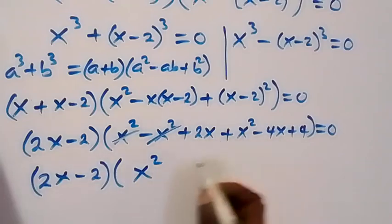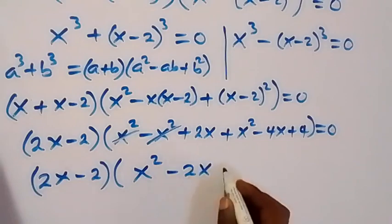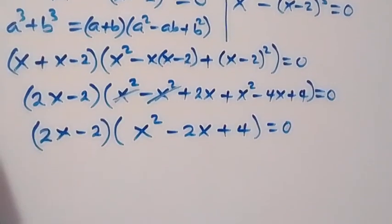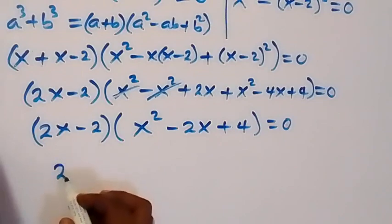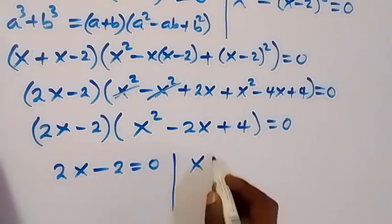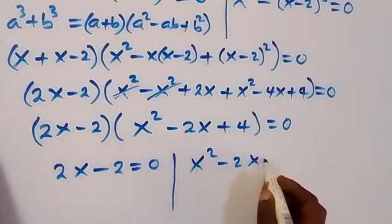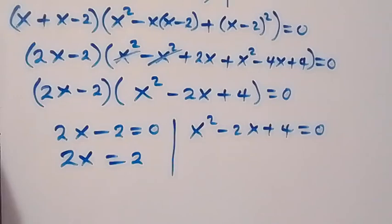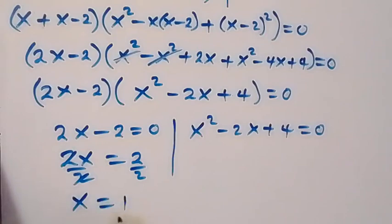After simplifying, we get x squared minus 2x plus 4, equals 0, as one factor. And we have two sub-cases from here: 2x minus 2 equals 0, giving x equals 1.